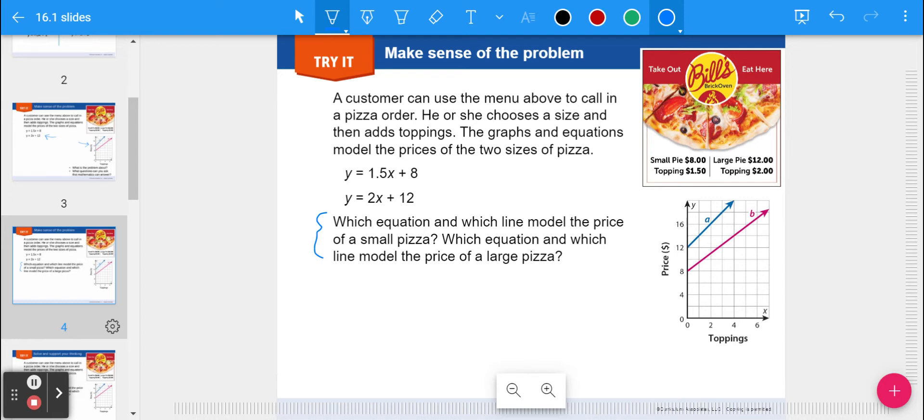Which equation and which line model the price of a small pizza? Hopefully you can connect the dots. The small pizza is eight dollars plus a dollar fifty per topping, so that matches up with the first equation because you see 1.5 and 8. The 1.5 is with the X because however many toppings you choose, you multiply by 1.50. If it's two toppings, you plug in 2 for X, multiply by 1.5, and add 8.